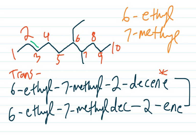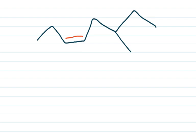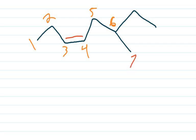Let's do another example. Starting by finding the longest carbon chain with the most substituents and the double bond at the lowest carbon number. Just by looking at it, you'd start numbering here so the double bond falls on carbon three. There's no other numbering pattern that gives a lower number than three. Going one, two, three, four, five, six, seven, eight — eight is our longest carbon chain.